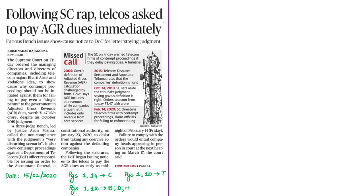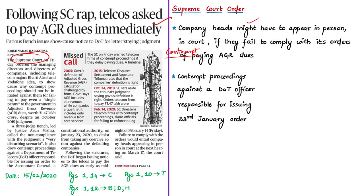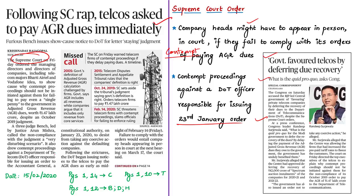In yesterday's newspaper, the Supreme Court questioned why contempt proceedings cannot be initiated against telecom companies for not paying AGR dues, and ordered that the next hearing is on 17th March, with company heads possibly required to appear in person if they fail to comply. The Supreme Court also drew contempt proceedings against the Department of Telecommunications officer responsible for issuing the 23rd January order to the Controller General of Communication Accounts. Based on this, the Department of Telecommunications began issuing notices to telecom companies to pay their AGR dues as soon as possible, and withdrew its 23rd January order.